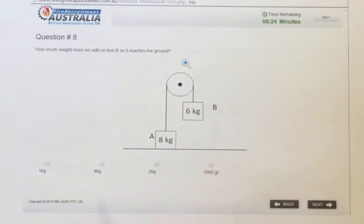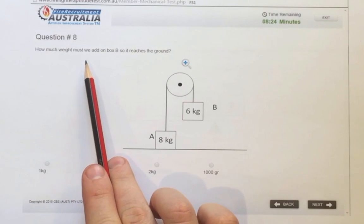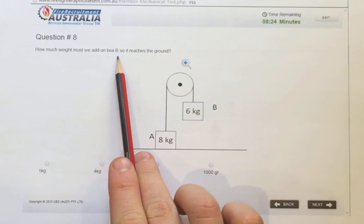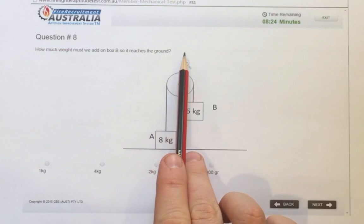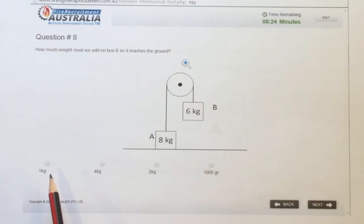Right, so the next one, pulleys. How much weight must we add on box B so it reaches the ground? One kilo, four kilos, two kilos or a thousand grams.